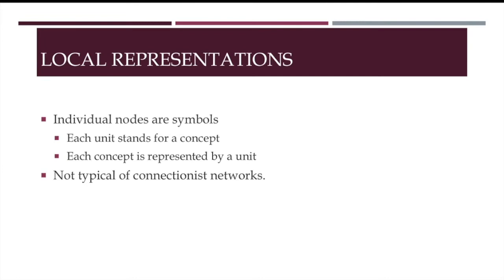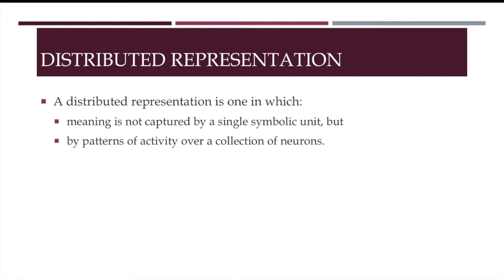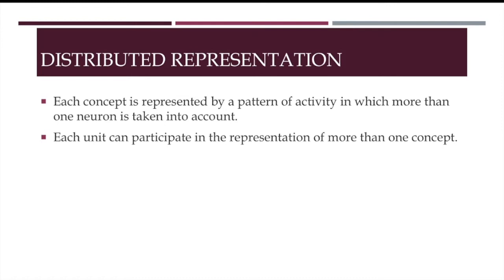However, this is not typical of connectionist networks, since they often instantiate distributed representations. In a distributed representation scheme, meaning is not captured by a single symbolic unit, but by patterns of activity over a collection of neurons. In such schemes, each concept is represented by a pattern of activity in which more than one neuron takes part. So, each unit can participate in the representation of more than one concept. So, it might be that all of the units in a layer participate in the representation of all concepts, so that the job is shared among all the nodes.